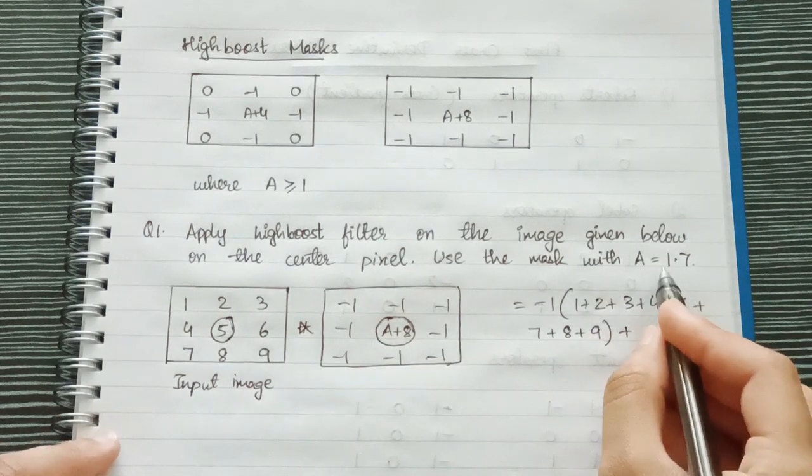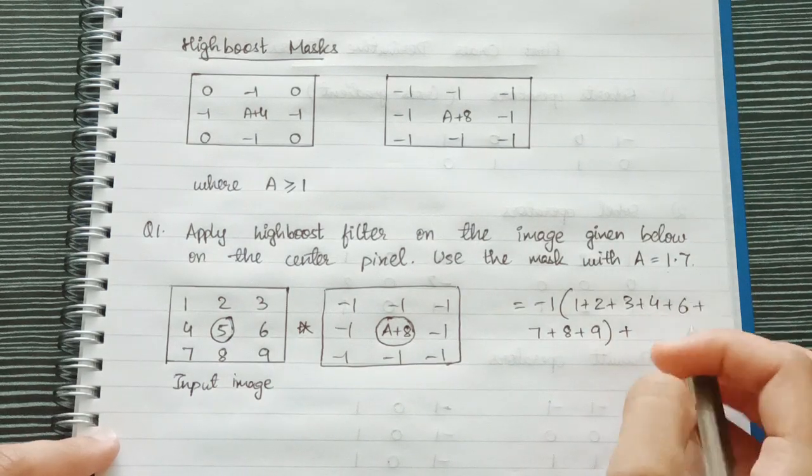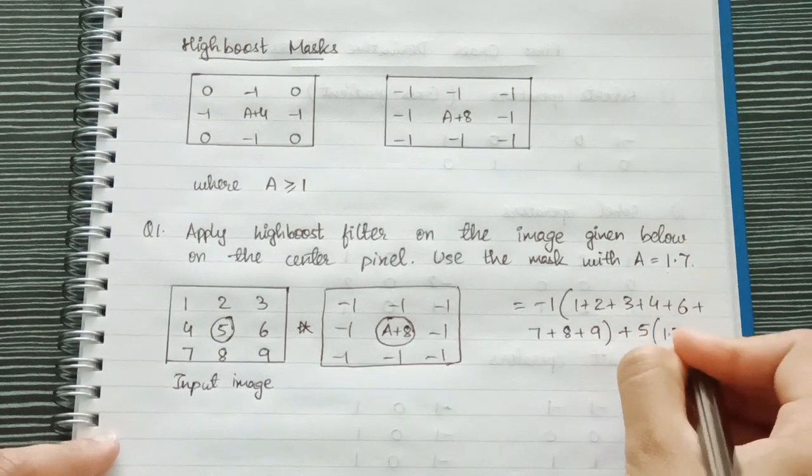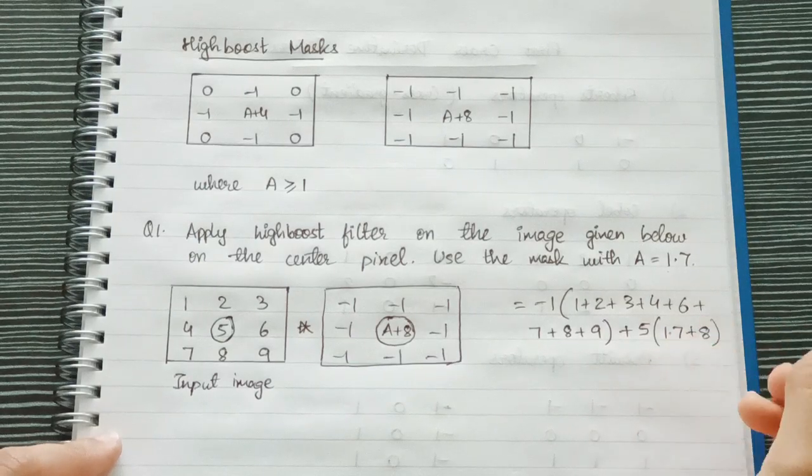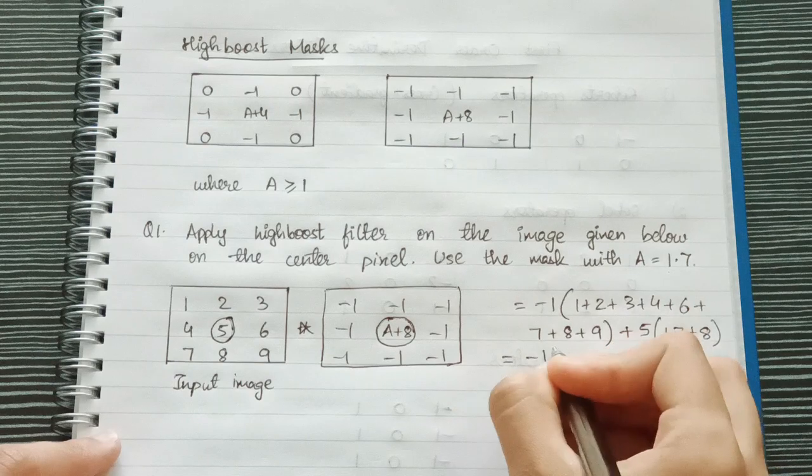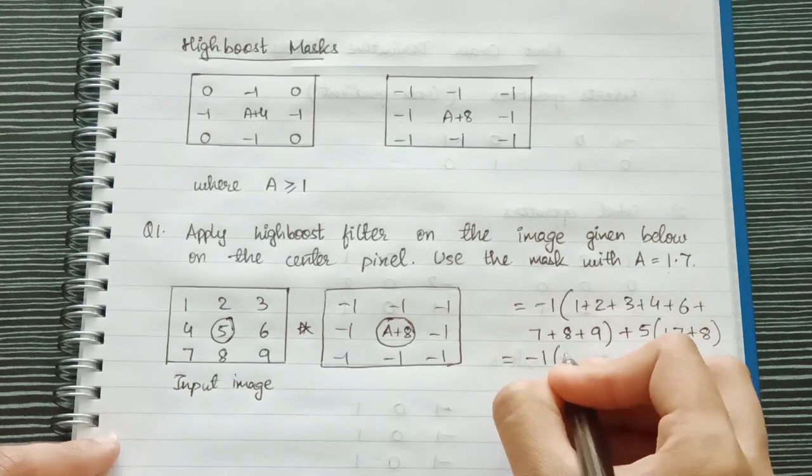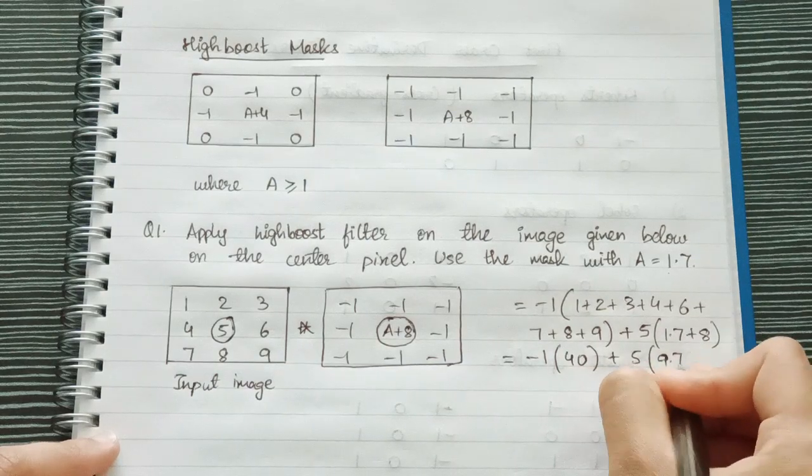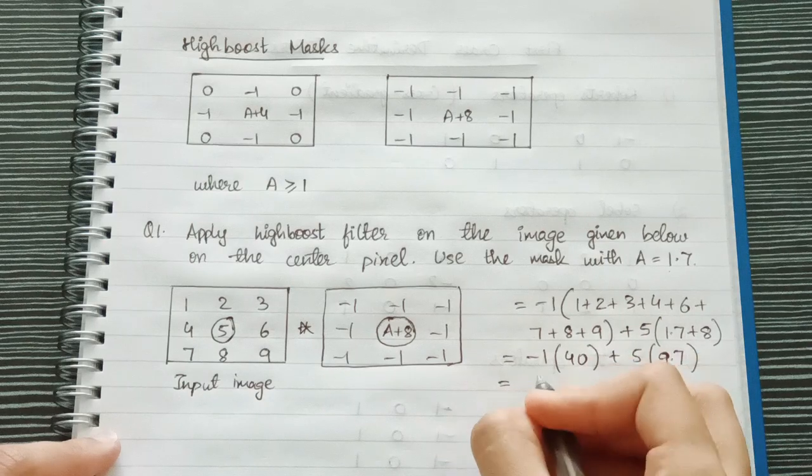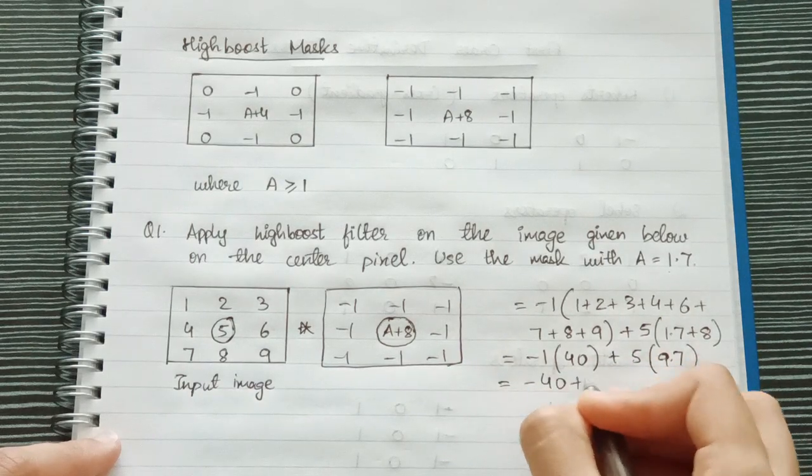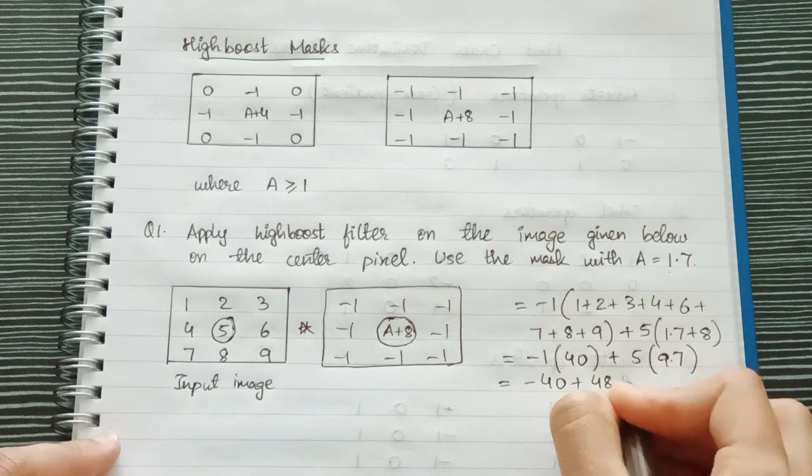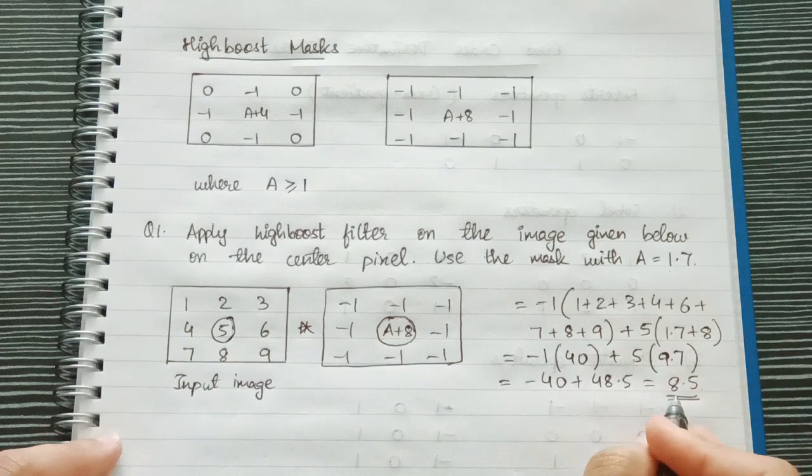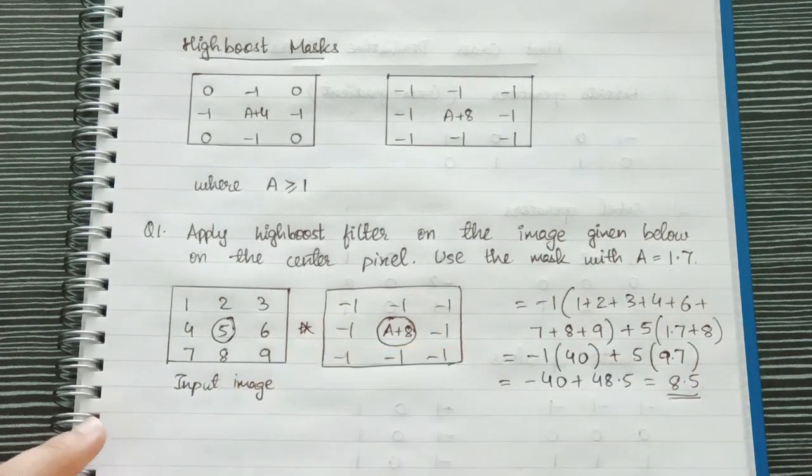And then we will multiply 5 into A+8. Now for A they have set the value as 1.7, so this will be -1 into 40 plus 5 into 9.7. This will be equal to -40 + 48.5 which will be nothing but 8.5. So this value will replace with this value and that would be our final answer.